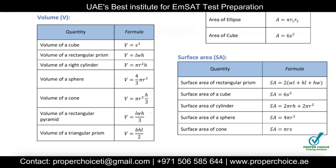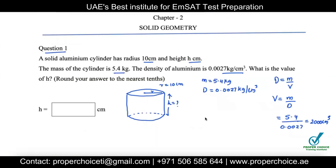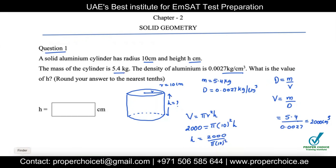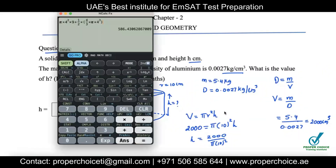Using V = πr²h, we substitute: 2000 = π × 10² × h. Rearranging for h: h = 2000 ÷ (π × 10²). Using a calculator, 2000 ÷ (π × 100) gives approximately 6.3666.